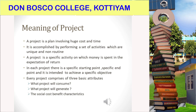Every project comprises three basic attributes: first, what the project will consume — that is, the input of the project, the resources: human resources and non-human resources. Second, what the project will generate — the output of the project. Third, the social cost-benefit characteristics — the sacrifice for society and the benefits for society. When we consume human and non-human resources, we generate benefits, and at the same time there are social sacrifices and benefits.